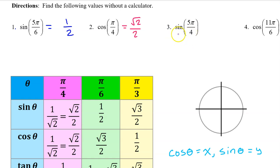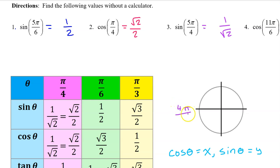I'm going to use the other version on number 3. The sine of 5π/4 will be the same as the sine of π/4, which can be written as 1/√2, except it might be negative depending on the quadrant. We can think of π as 4π/4, so 5π/4 will be one multiple past 4π/4, putting it in the third quadrant. Sine is the y value on the unit circle, and in the third quadrant y values are negative. So the answer is negative 1/√2.